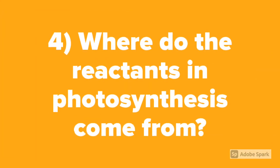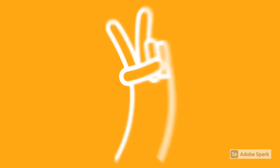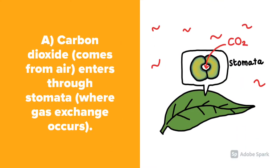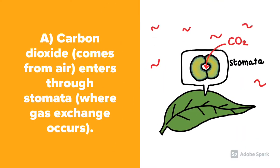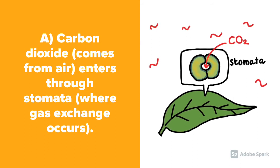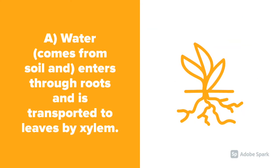Question number 4: Where do the reactants in photosynthesis come from? Carbon dioxide comes from the air and enters through the stomata where gas exchange occurs. Water comes from the soil and enters through the roots and is transported to the leaves by the xylem.